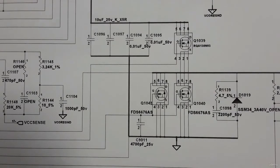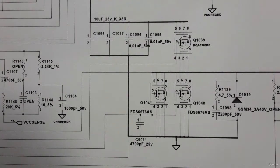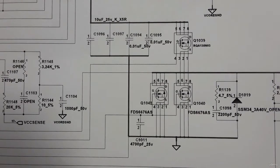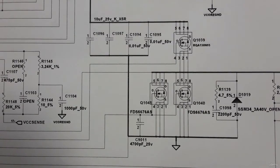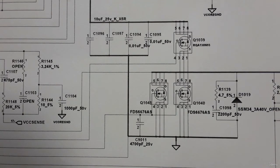For the CPU, you will generally find two channels or more. The reason is that the CPU is always working and always needs power. If it had just one channel, the components of that channel could easily be damaged. To distribute the heat from the processor and its components, the manufacturer uses multiple channels. The channels alternate: when the first channel is working, the second is resting, and vice versa.